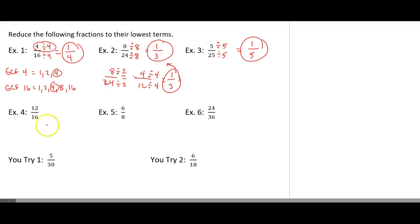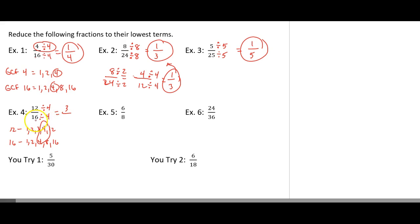A couple more examples. So 12 and 16 — if I write the factors of 12: 1, 2, 3, 4, 12. Factors of 16: 1, 2, 4, 8, 16. So 4 is a common factor. Divide the numerator by 4 and the denominator by 4. 12 divided by 4 is 3, and 16 divided by 4 is 4. So if we go to reduce 6 eighths, 2 goes into 6 and 8. So I'm going to divide 6 by 2 and 8 by 2. That gives you 3 over 4.